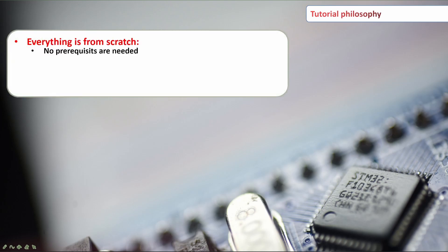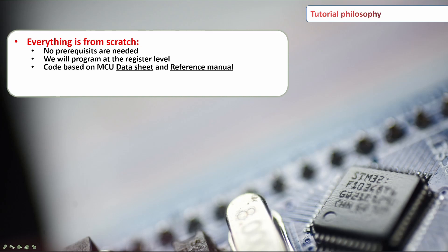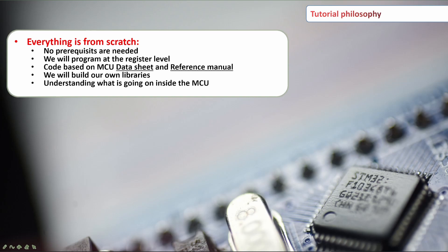First of all, everything will be from scratch — you will not need any prerequisites for this tutorial. You will program your microcontroller at the register level, which is really the lowest memory part of the microcontroller. You'll be coding the MCU based on the datasheet and reference manual — not copying any libraries. We will see together how to understand the manual, and we will be building our own libraries, taking you from a really low level up to making your own functions and understanding what's going on inside the MCU.